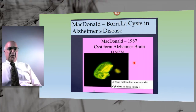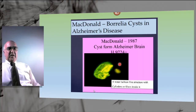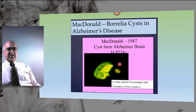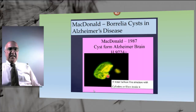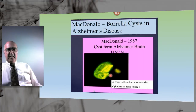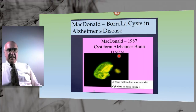Cystic forms tend to contain water and other material, and when water is lost — just as a grape transforms into a raisin when it loses its water content — cystic forms of Borrelia or round bodies tend to shrink or wrinkle. When water is lost from their internal region, you have a wrinkled profile in the membrane of the partially collapsed cystic spirochete.